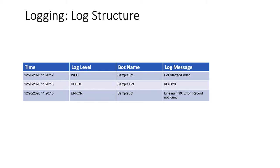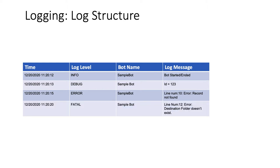For ERROR, it's very important to have the right log message — you'd want to know which line the error occurred on, so it should have at least a line number and the error message. ERROR differs from FATAL in this way: suppose you're processing 100 records and the bot fails at the 50th record — the next record would probably work fine, so you log that as an error and move on. But FATAL means you can't recover: for example, if the destination folder doesn't exist, or the website is down — those types of issues are fatal and you cannot proceed.